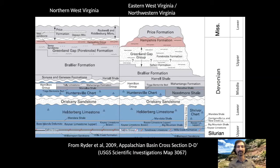Well, hello everyone and welcome to a Devonian traverse along Corridor H. This is an introduction to Stop 2, but also a little bit of an introduction to some of the Paleozoic strata that we'll see along the greater extent of the highway. One of the great things about Corridor H is that it spans all of the Devonian time — the rocks that you'll see along the stretch of the highway cover the Devonian in its entirety, and you can piece together the outcrops in different places to see the entire section.